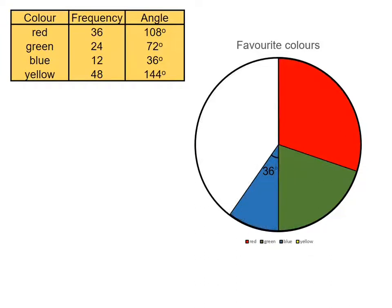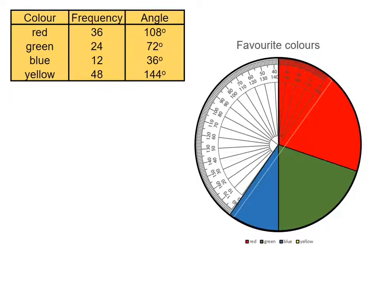And then finally, we need to just check at the last one. So 0 going on the inside is 144 degrees, which we can see it is. You need to be extremely accurate. And you need to make sure the protractor, the centre part of the protractor, is actually on the centre of the circle. So there's the last bit.